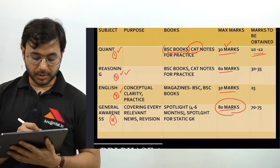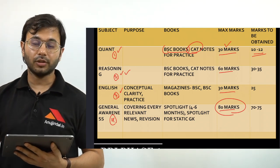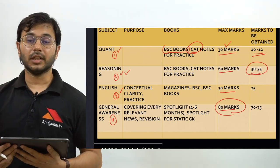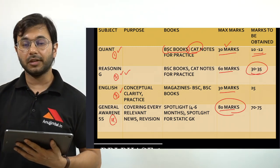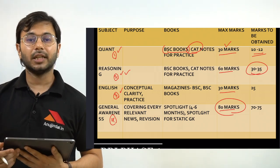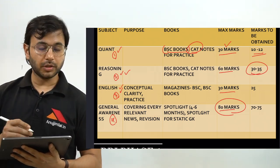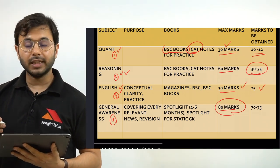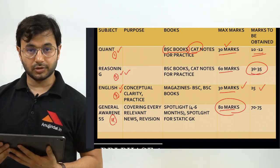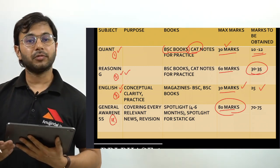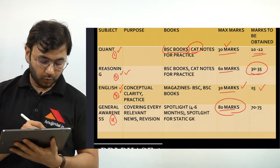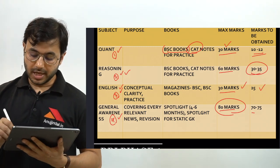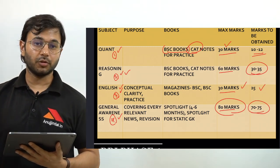For Reasoning, the preparation for understanding concepts as well as practicing remains exactly the same. The weightage is 60 marks, out of which if you're able to score 30 to 35, you can say you are in a good zone. English is one of the easiest sections in Phase 1; out of 30, you can easily score 20 to 25 if you're practiced well. The fourth section is General Awareness, which holds the most importance because the percentage of marks you can get out of 80 is very high.